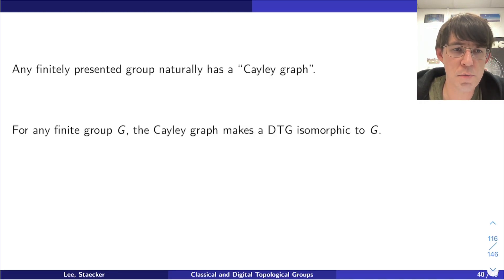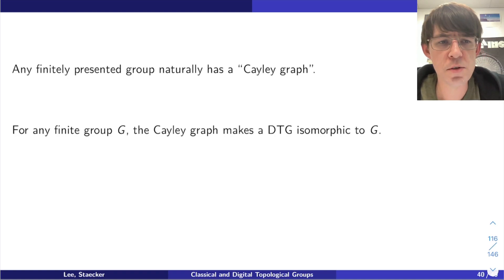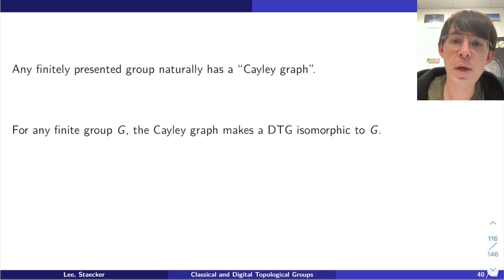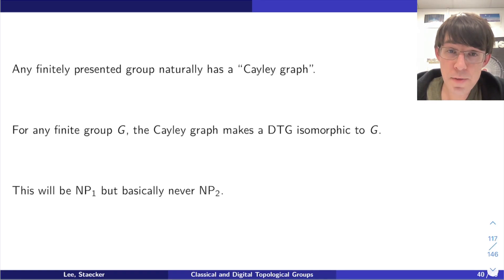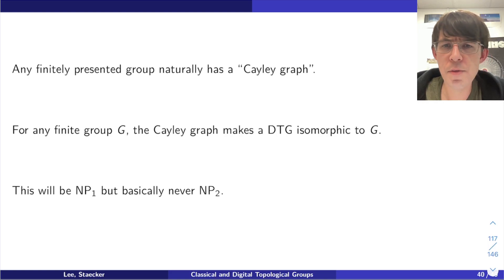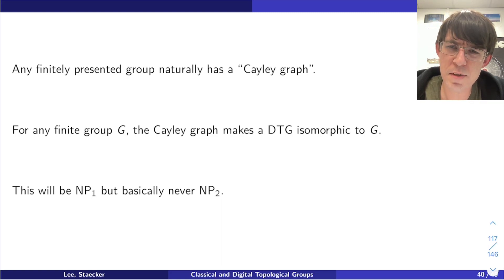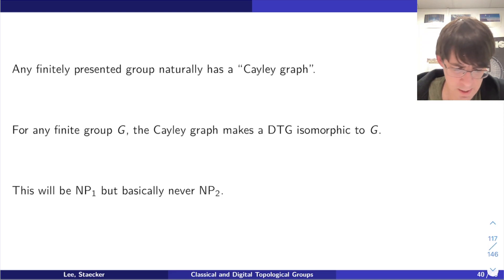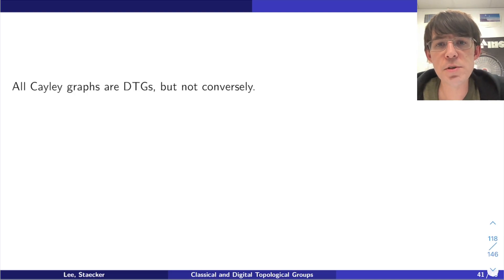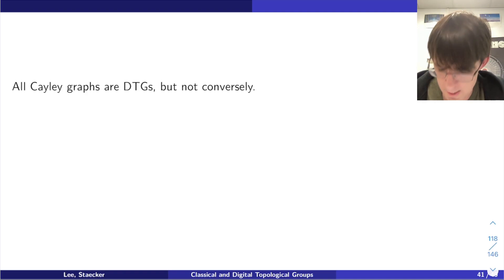Any finitely presented group has something called a Cayley graph — a standard way to transform any finitely presented group into a graph. The Cayley graph of the dihedral group is exactly that cube. So for any finite group, the Cayley graph can be turned into a digital topological group, and it's basically never going to be NP2 — it's always going to be NP1. The only exception is if you coincidentally get a complete graph, which would require a very trivial group. All Cayley graphs are digital topological groups, but the converse is not true — you can make a digital topological group which is not a Cayley graph.